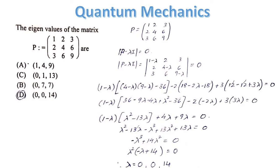Therefore, the eigenvalues of the matrix P are 0, 0, and 14.